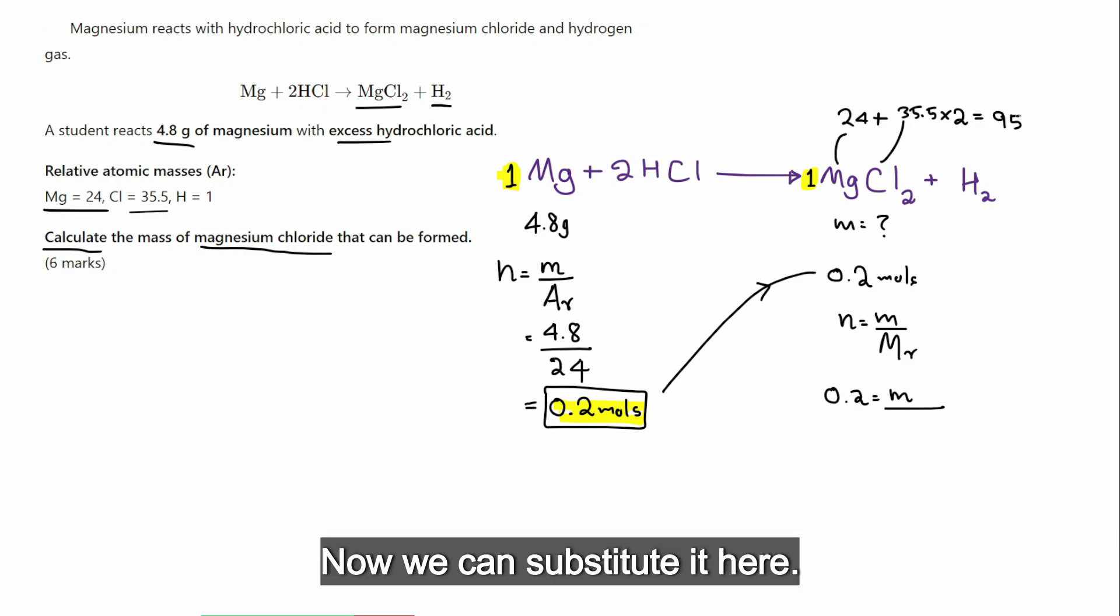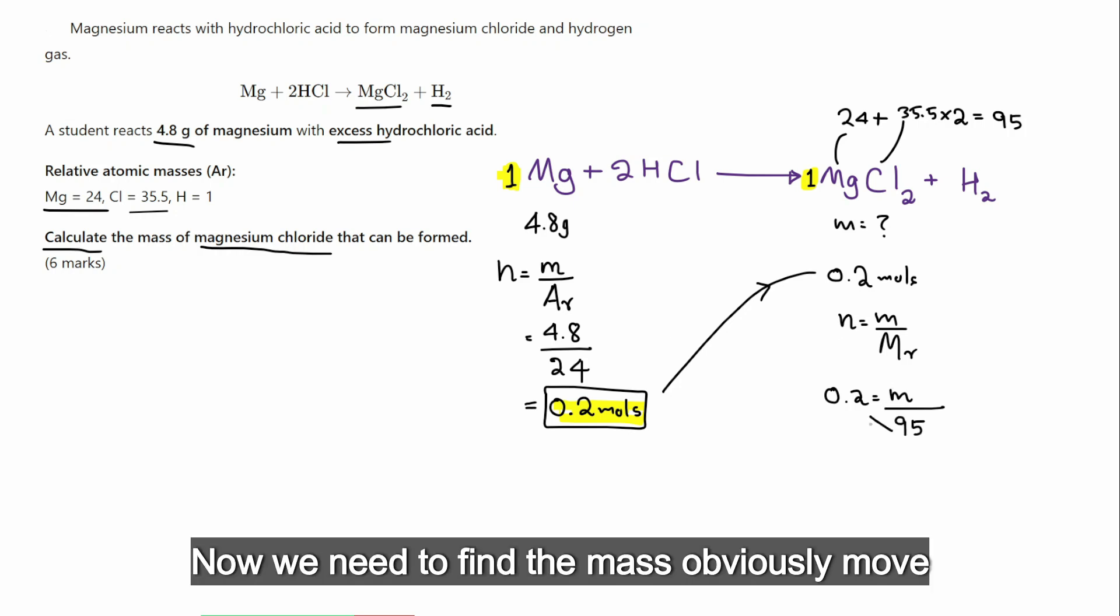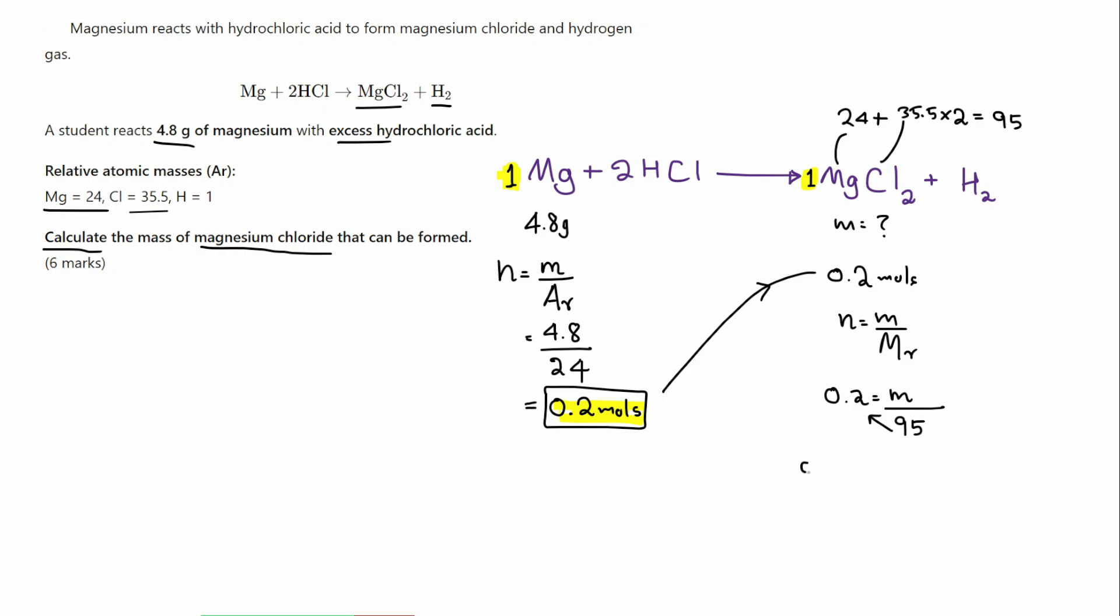Now, we can substitute it here. Now, we need to find the mass. Obviously, move 95 to this side. So, it's 0.2 multiplied by 95 is the mass. So, we get the answer as 19 grams. Final answer.